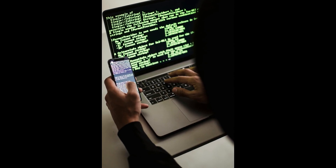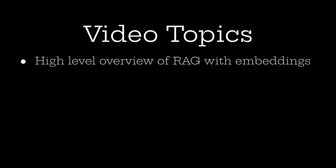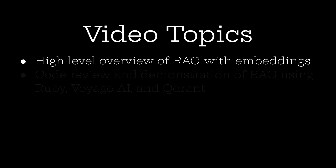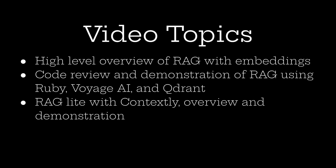In order to thrive in the AI age, software developers will need to have a good understanding of RAG as it will be a critical tool in their toolbox. In today's video, I'm going to give a high-level overview of RAG using embeddings. Next, I'm going to give a demonstration of a RAG implementation I wrote using Ruby, Voyage AI, and Quadrant. We'll then take a look at the code, and finally we'll look at a RAG Lite implementation with Contextly, which is an application I plan to release to the public in the future.